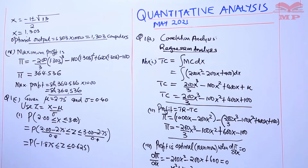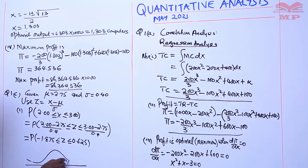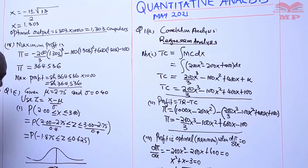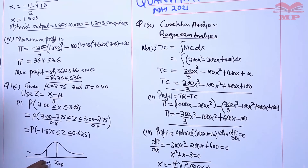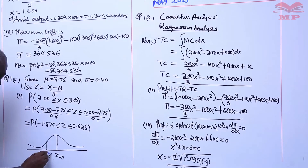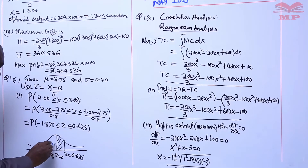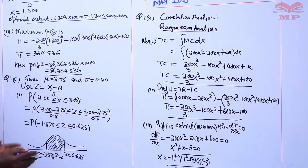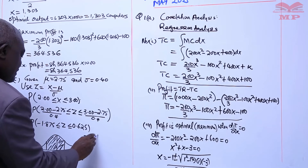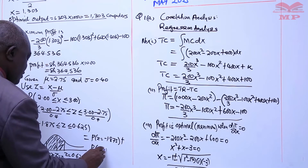We always advise students to use a sketch diagram of the normal curve to show which is the required region for computation. On the sketch: the line of symmetry is at Z equals 0, with Z equals negative 1.875 to the left and Z equals 0.625 to the right. The shaded area between these two points is the required area. This equals the probability of Z equals negative 1.875 plus the probability of Z equals 0.625, since the two areas are on opposite sides of the line of symmetry.